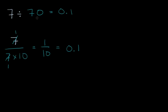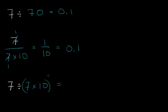Another way to think about it: you could write this as seven divided by seven, then divided by 10. If you're dividing by seven times 10, this is going to equal seven divided by seven, then divided by 10. Well, seven divided by seven is one, so you get one divided by 10, which is one tenth, or 0.1.